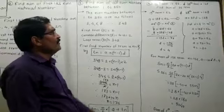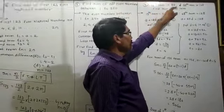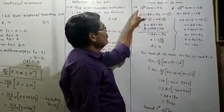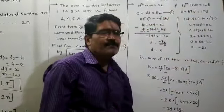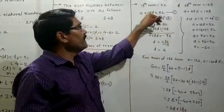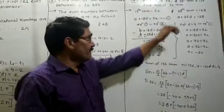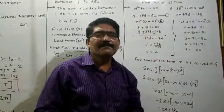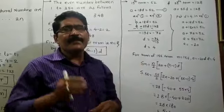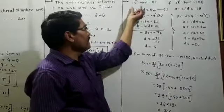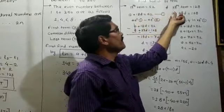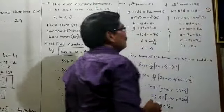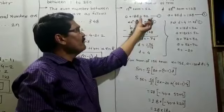Then, come to the last question. The 19th term is 52 and the 38th term is 128 — find the sum of the first 56 terms. The 19th term means A plus 18D equals 52, and the 38th term means A plus 37D equals 128. These give us two linear equations. We do not have A and D yet, so we need to find them.